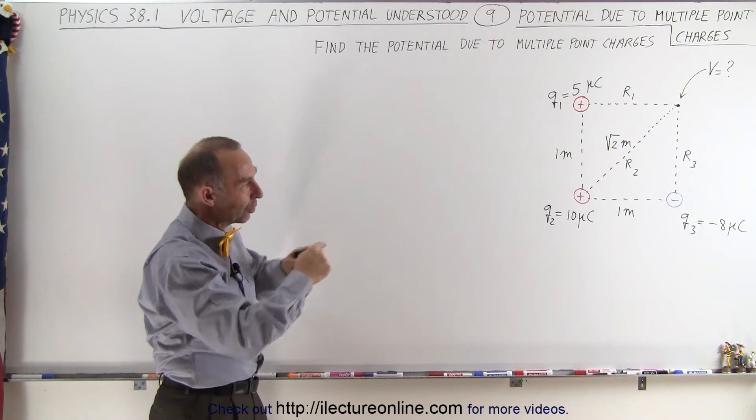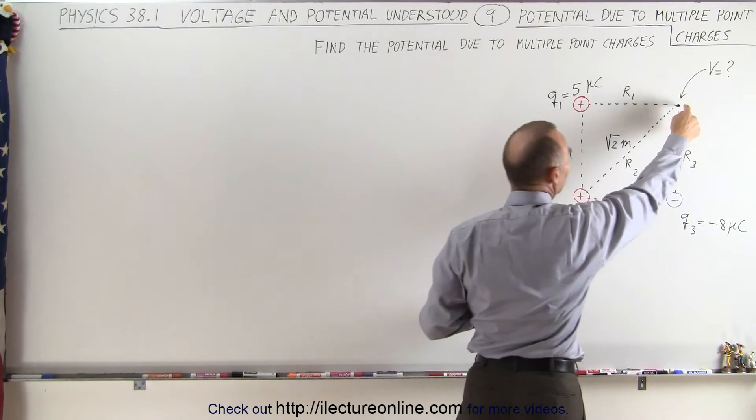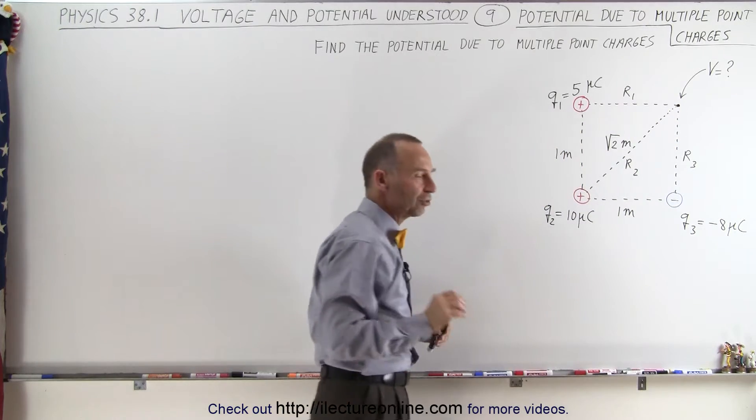We have two positive and one negative charge. They're all at the corners of a square, and on the fourth corner that's not occupied by a charge, we're going to try to find the potential at that location.